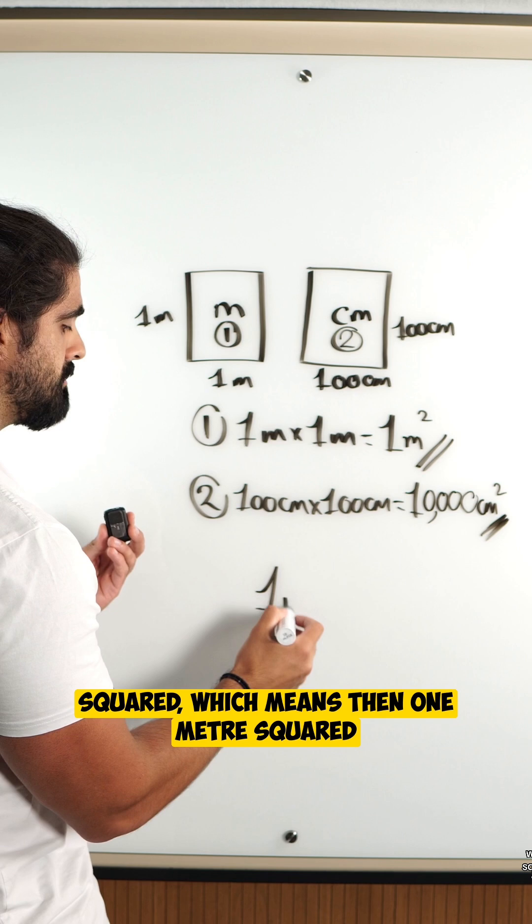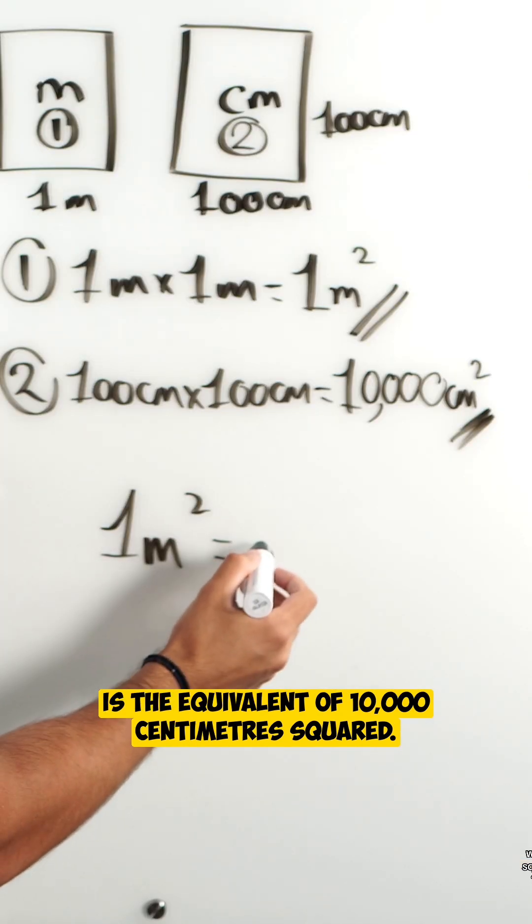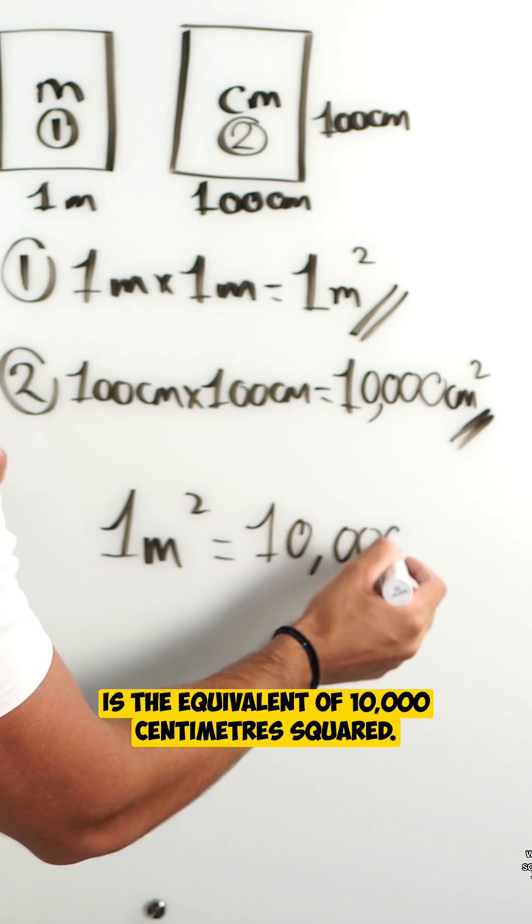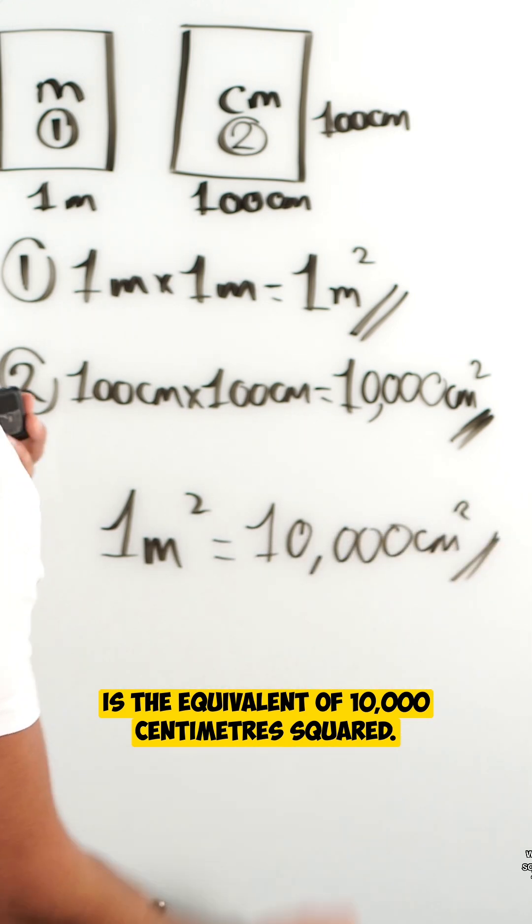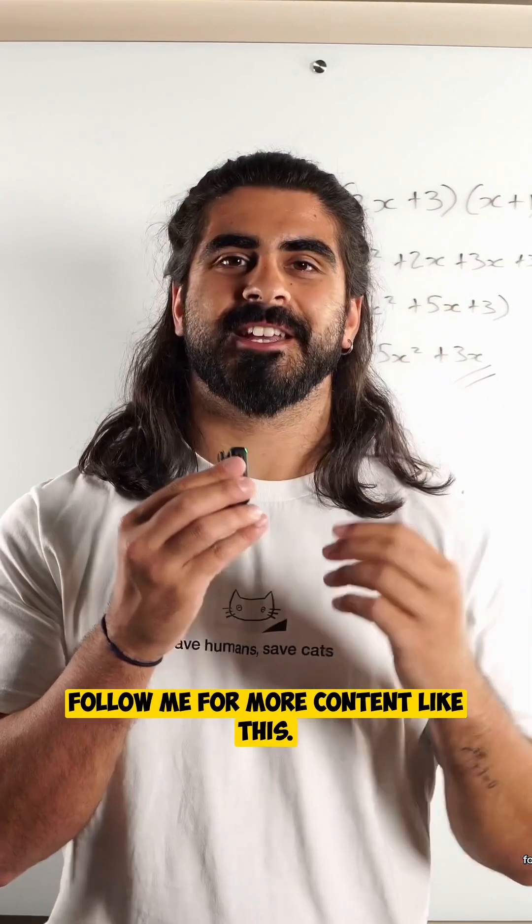Which means then one meter squared is the equivalent of 10,000 centimeters squared. Nice. Follow me for more content like this.